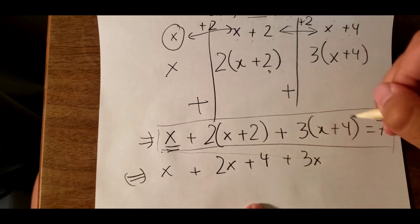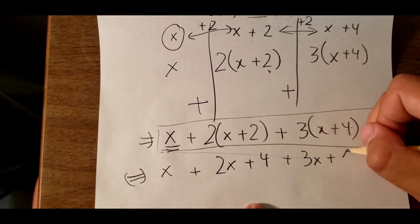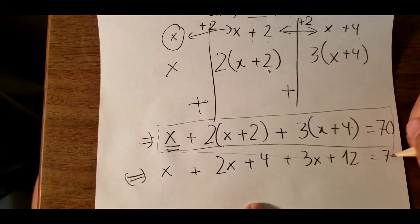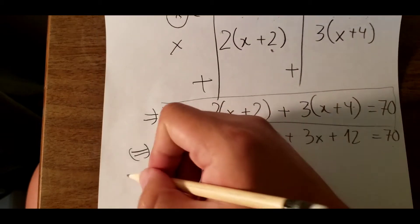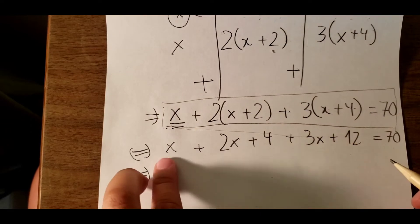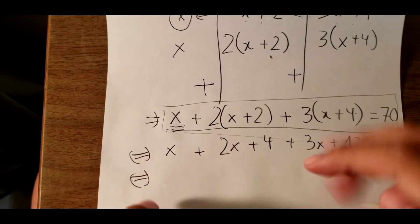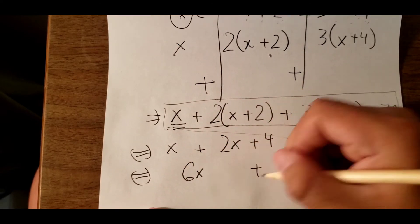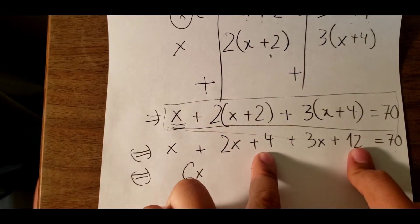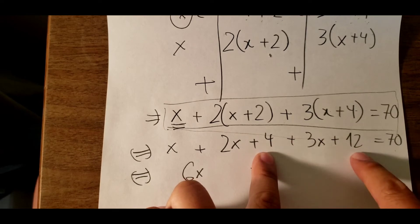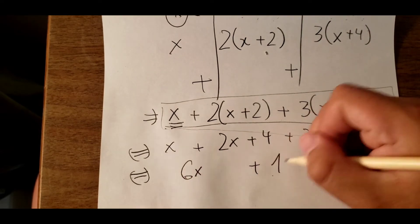3x, and 3 times 4 is 12. So we have x, 2x and 3x combined together, which gives us 6x. And 4 plus 12 is about 16.